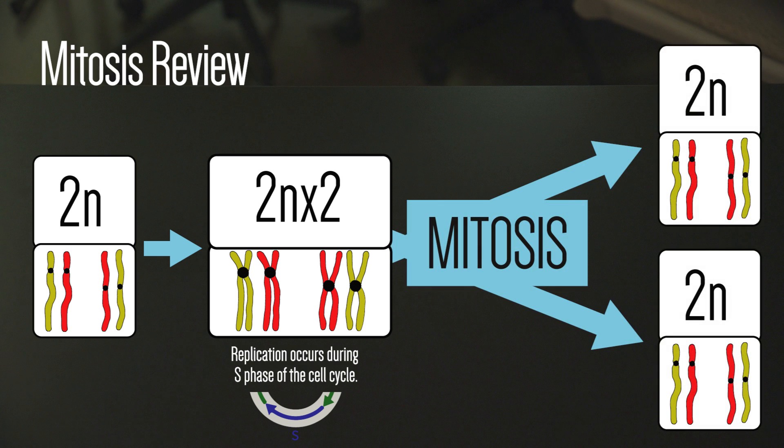In mitosis, these chromatids are separated by the action of the spindle fibers, which pull the chromatids apart to make separate chromosomes destined for two new diploid cells.